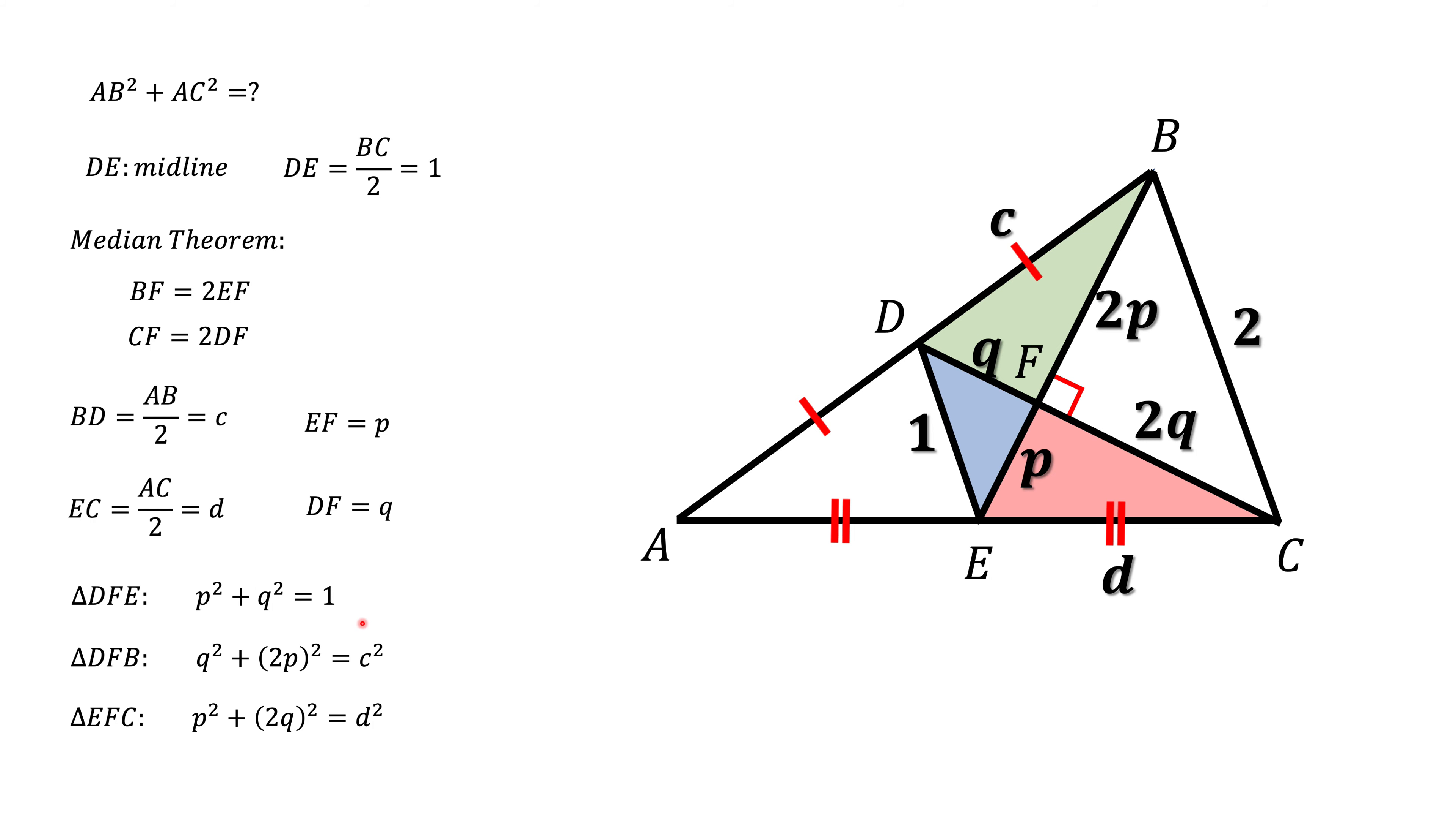And the next thing we're going to do, we're going to look at these two last equations, and we're going to add them up, open the parenthesis here, and what we're going to get is on the left hand side, we get 5 times P squared plus Q squared. On the right we get C squared plus D squared.